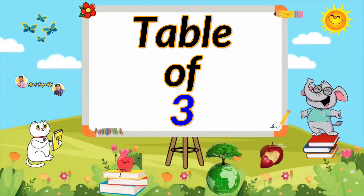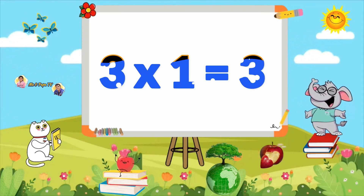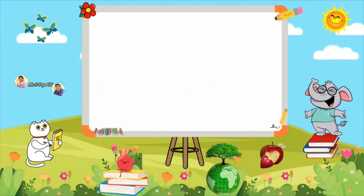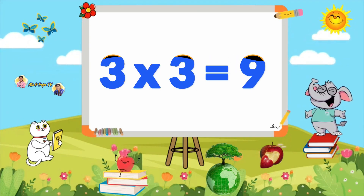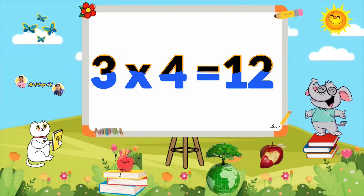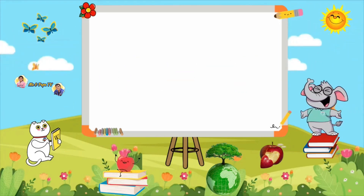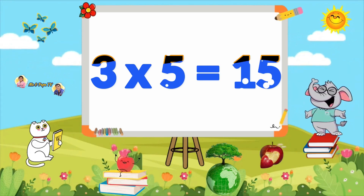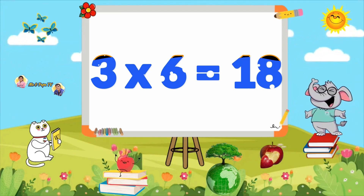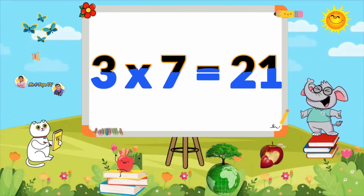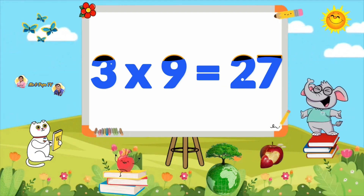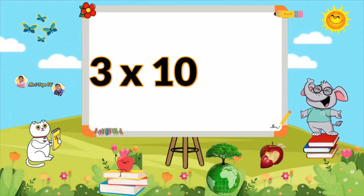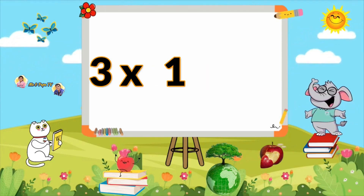Learn Table of 3. 3×1=3, 3×2=6, 3×3=9, 3×4=12, 3×5=15, 3×6=18, 3×7=21, 3×8=24, 3×9=27, 3×10=30.